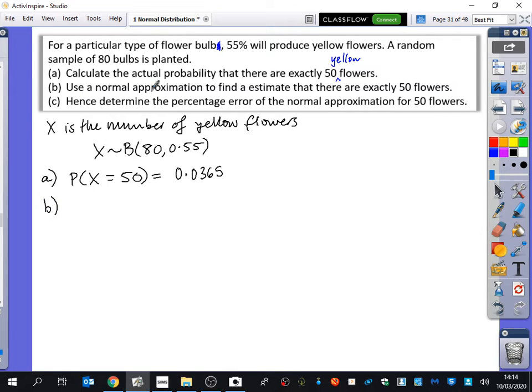Now part B has said use a normal approximation. In the exam, it's probably going to say by using a suitable approximation. A suitable approximation is the only one that you know how to do, which is the normal one. So they're never going to tell you to do this. They're going to ask you to use a suitable approximation, and that tells you I'm going to do the binomial to normal thing. So it says use a normal approximation to find an estimate that there are exactly 50 flowers. We're going to try and see how close they are by doing a normal versus doing a binomial.